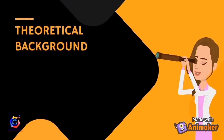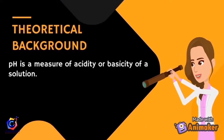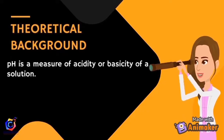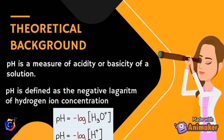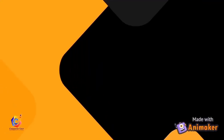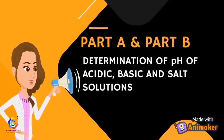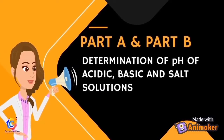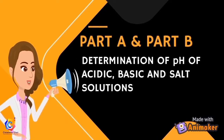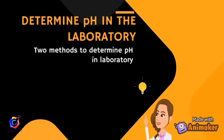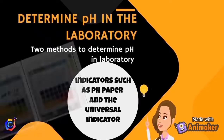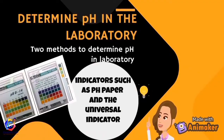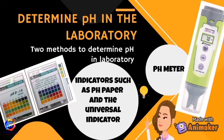Now let's look at the theoretical background. pH is a measure of acidity or basicity of a solution, defined as the negative logarithm of hydrogen ion concentration. For experiment parts A and B, we will determine the pH of acidic, basic, and salt solutions using two methods: indicators such as pH paper and the universal indicator, and the pH meter.